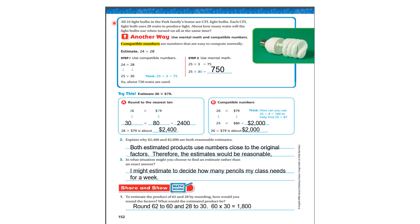Let's look at this page. All 24 light bulbs in the Park family home are CFL light bulbs. Each CFL light bulb uses 28 watts to produce light. About how many watts will the light bulbs use when turned on all at the same time? Well, we can use mental math and compatible numbers. Compatible numbers are numbers that are easy to compute mentally.